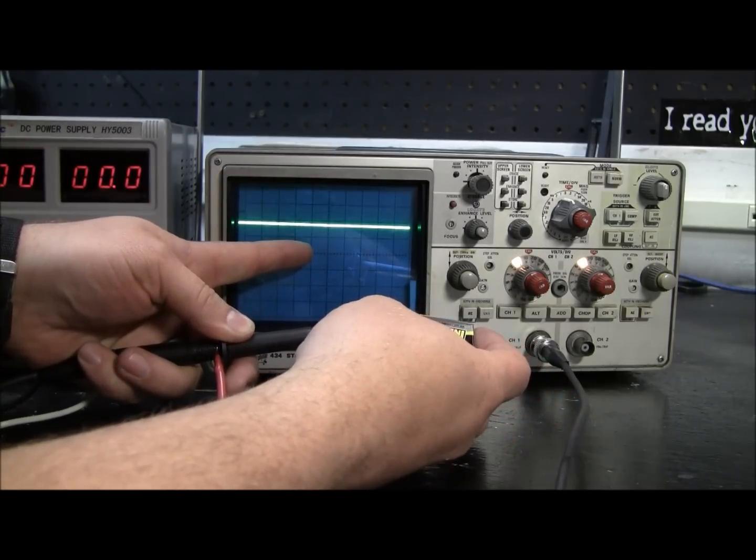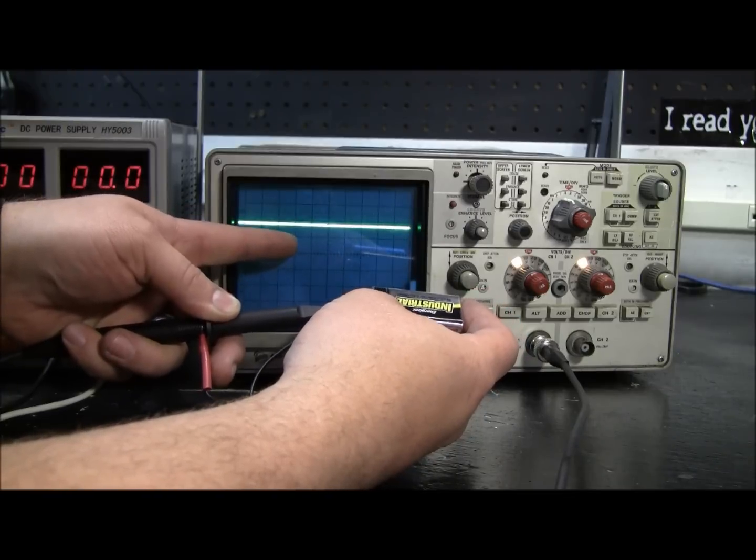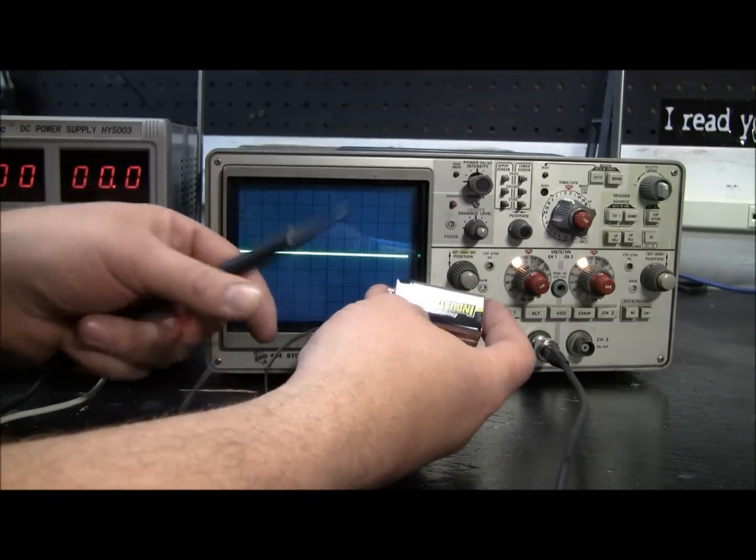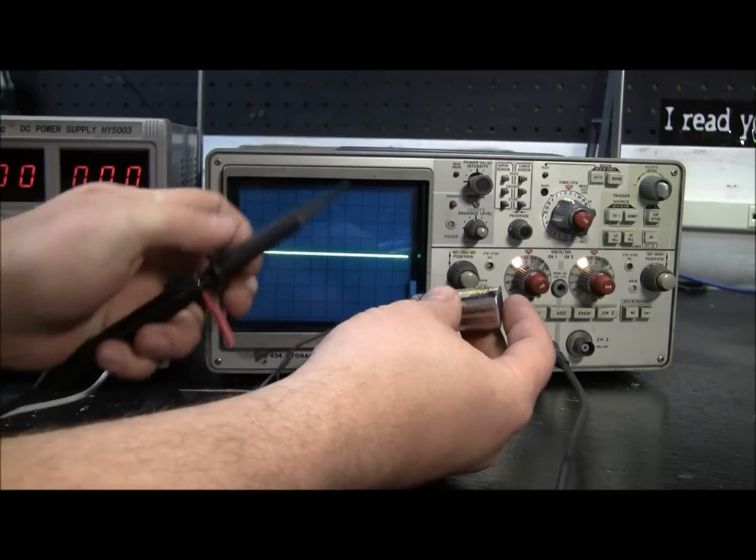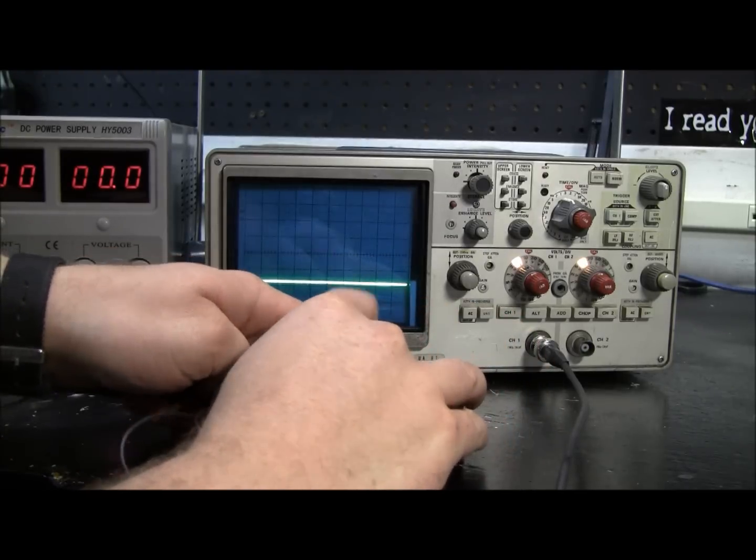So if you go above the center line, it's positive. Now if I reverse this battery, I can make this line go down. You can see that I have nine volts negative there.